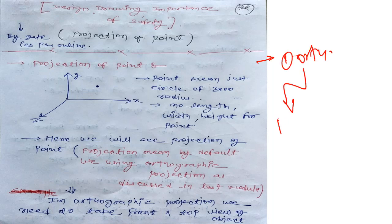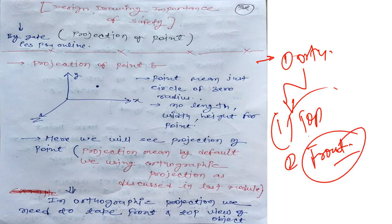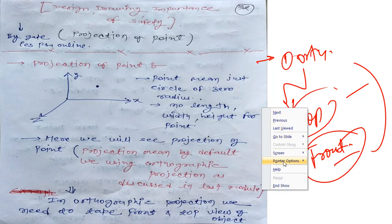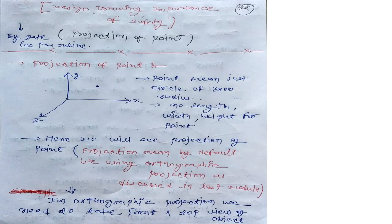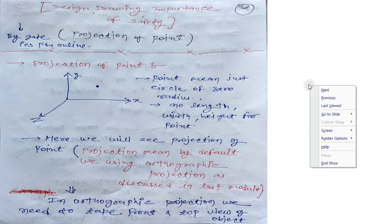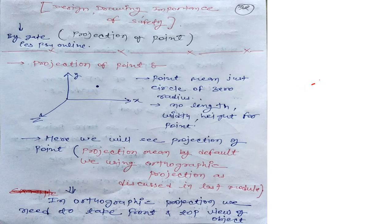Any person asking about projection means we need to find the orthographic projection — top view and front view. That is your complete orthographic projection. Before we start, let us recall what a point is. A point has no width, no length, and no height. For example, in 3D, this is the point.